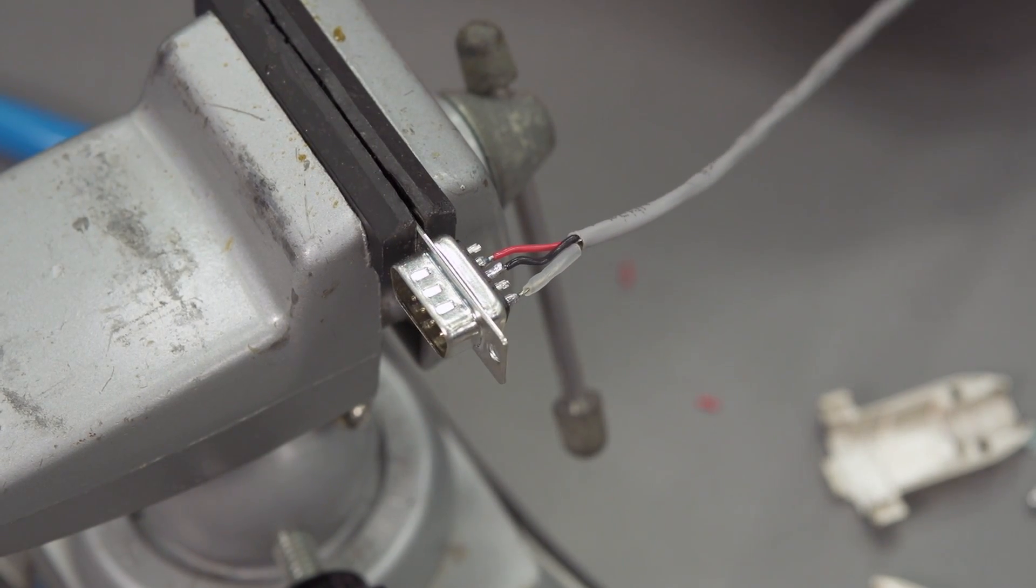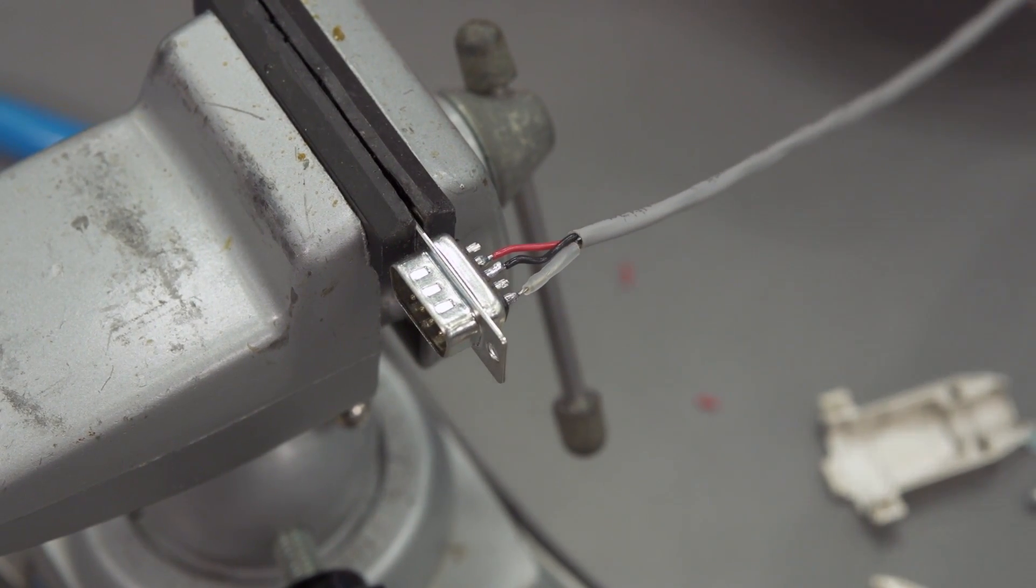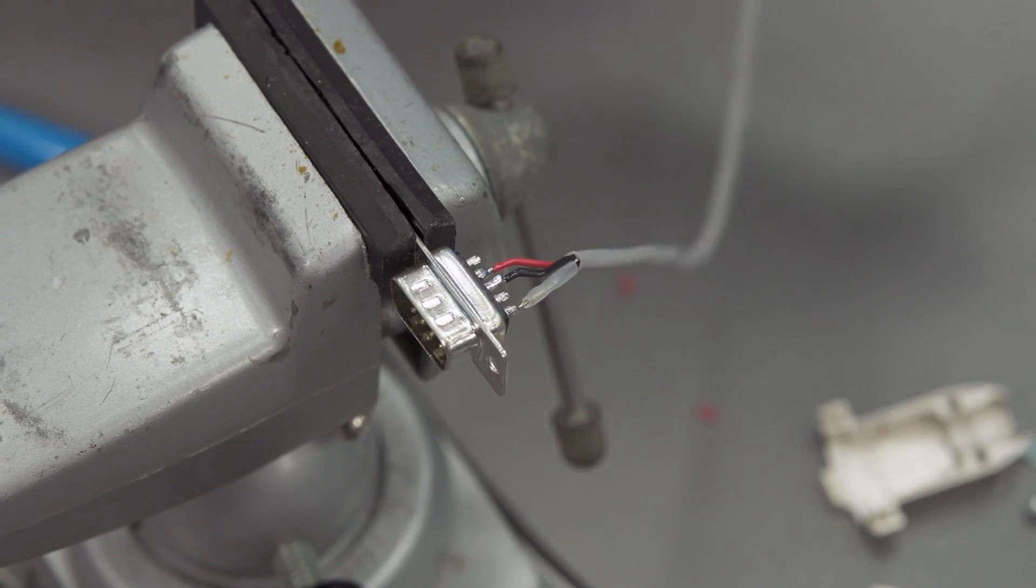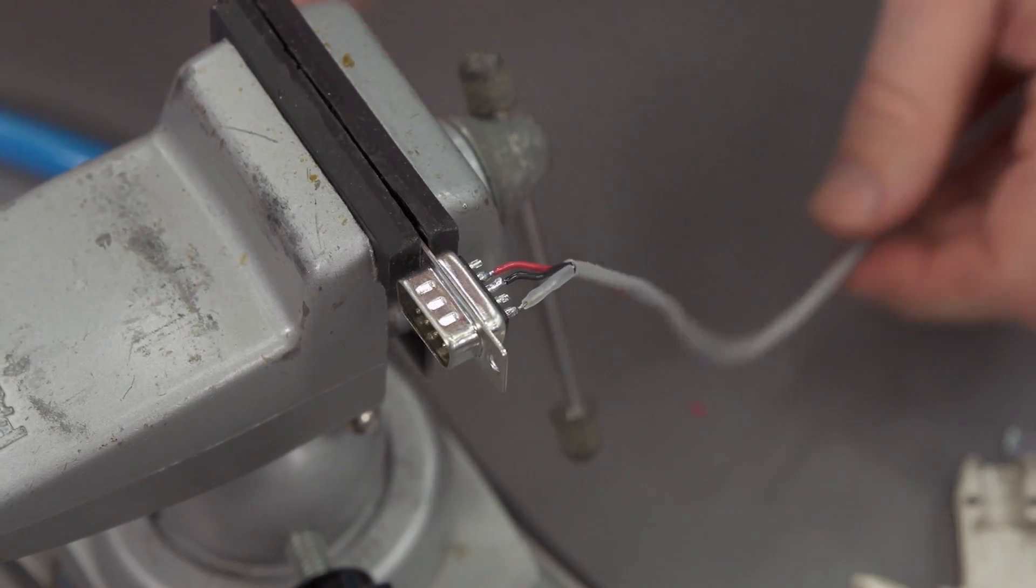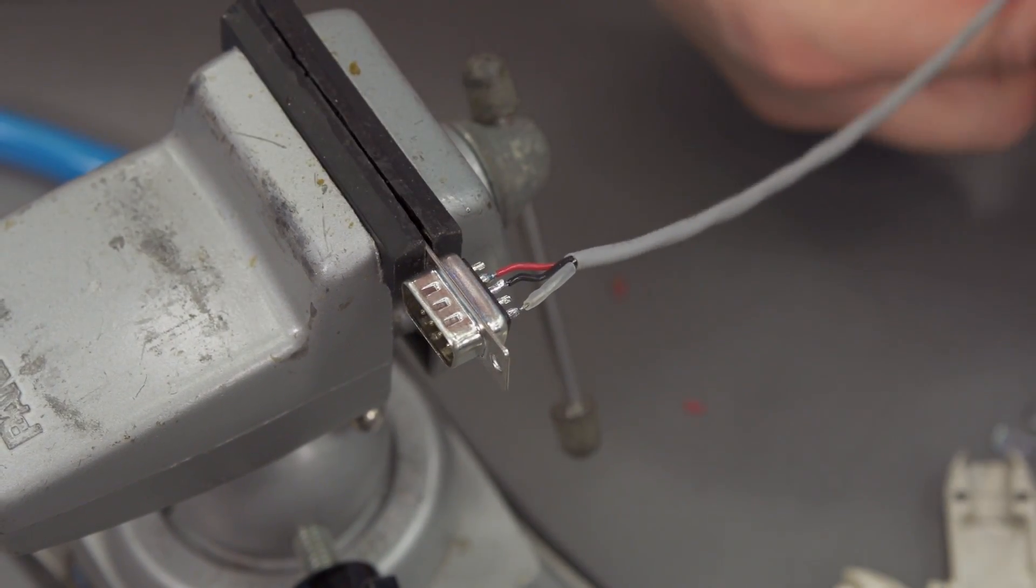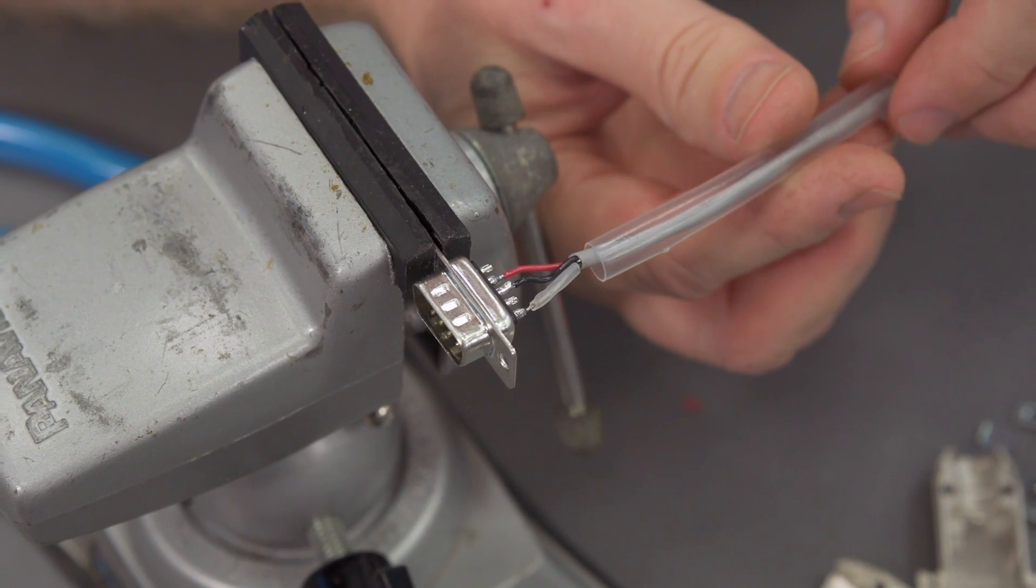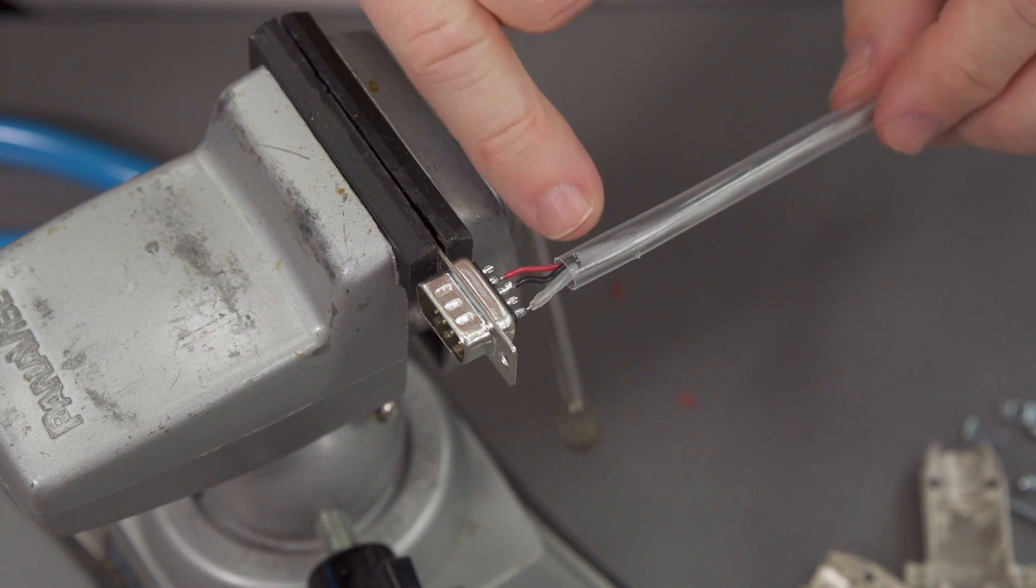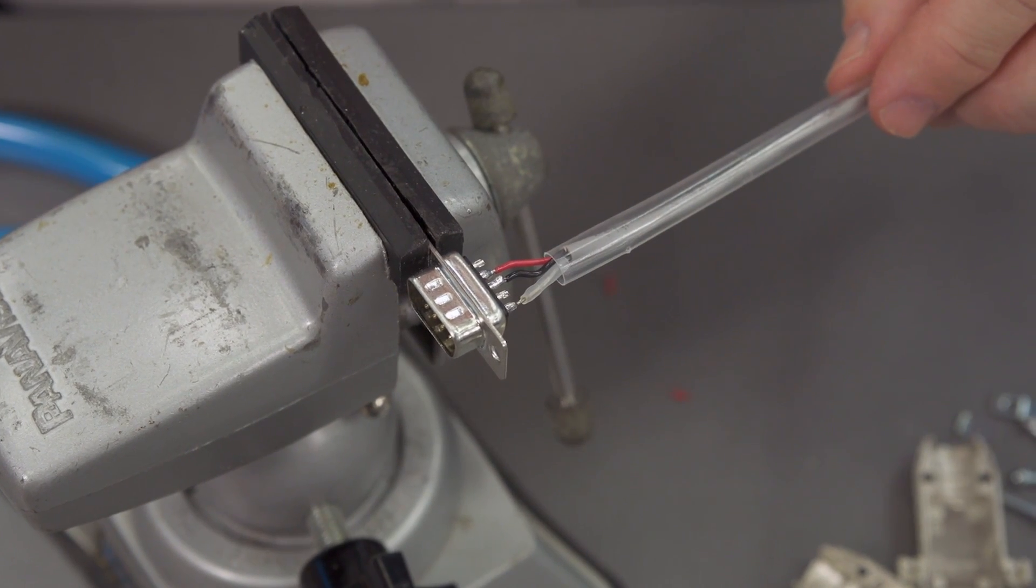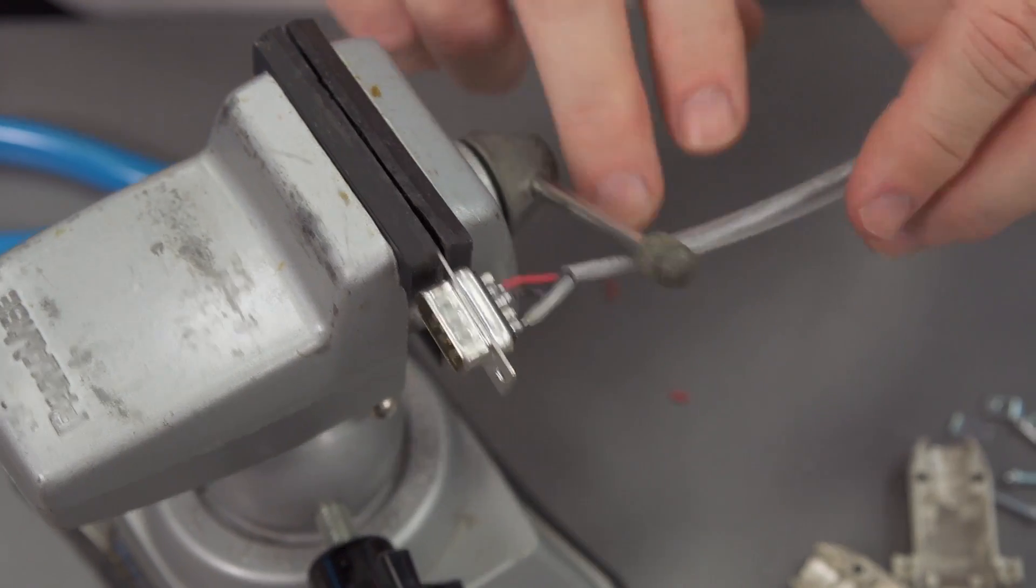I'm going to go ahead and bring my heat shrink up. What I'm going to do with my heat shrink is I'm going to shrink down the part on the shield first, and then I'm going to bring this heat shrink up and make sure it covers the transition point here. Let's go ahead and bring over our heat gun.